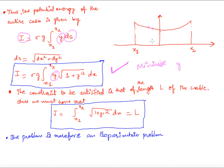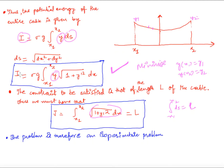The boundary conditions are y(x1) = y1 and y(x2) = y2. Additionally, the length constraint requires the integral from x1 to x2 of ds = L, which becomes the integral of sqrt(1 + y'²)·dx = L. So we have to minimize the potential energy functional subject to these boundary conditions and this subsidiary length constraint — confirming this is an isoperimetric problem.